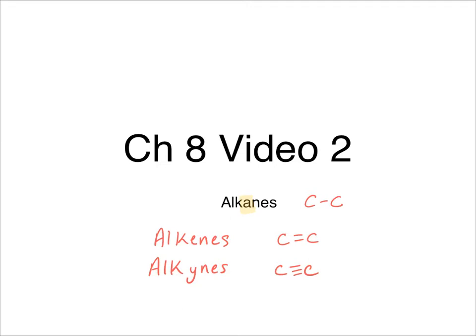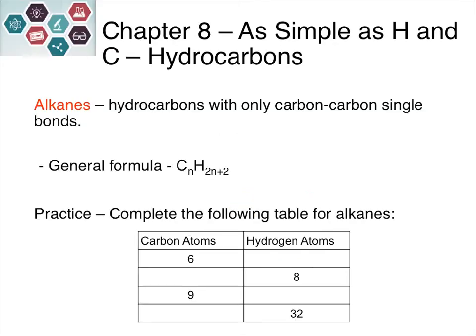Alkanes are hydrocarbons that only have carbon-carbon single bonds. For each type of hydrocarbon we have a general formula. For alkanes, that general formula is CₙH₂ₙ₊₂. This means that if you know the number of carbon atoms, which we call n, you can figure out the number of hydrogen atoms by plugging n in and doing 2 times n plus 2.